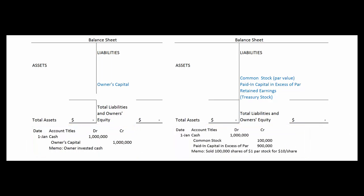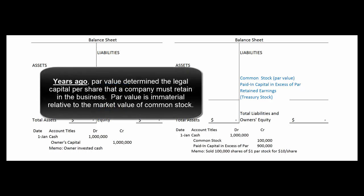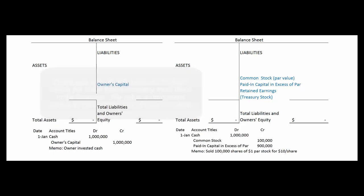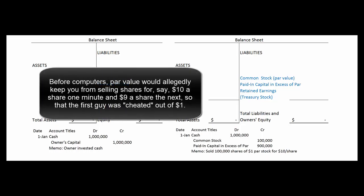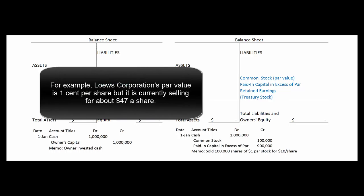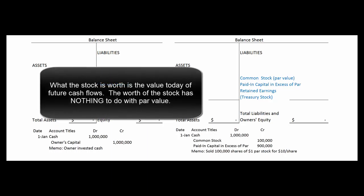Many states require companies to establish a par value, which is an absolutely meaningless number. There are various stories about why it came about — maybe to protect creditors so a company can't declare a large dividend and go out of business, or to protect future stock purchasers from pricing inconsistencies. But the point is that par value nowadays only confuses beginning accounting students. If a state requires it, companies set it as low as possible to maximize flexibility in declaring dividends, then sell the stock for whatever it's actually worth.